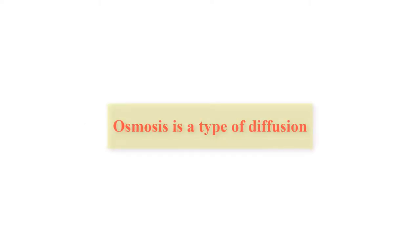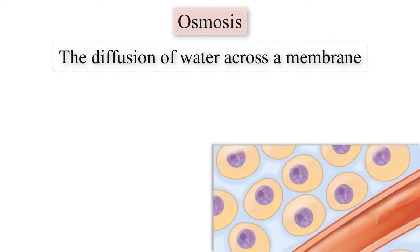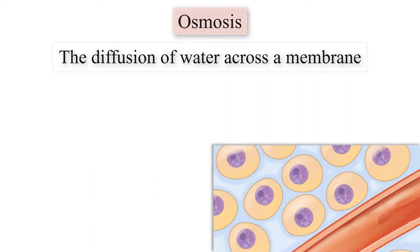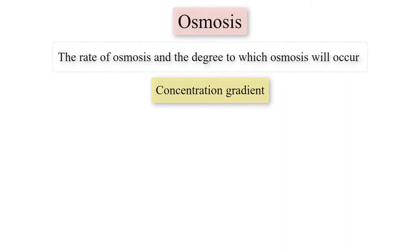Osmosis is a type of diffusion — specifically, the diffusion of water across a membrane. Water passing from the blood into the interstitial fluid is an example of osmosis. The rate of osmosis and the degree to which osmosis will occur is governed by concentration gradient, just like diffusion of other molecules.